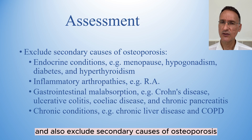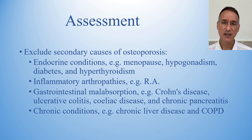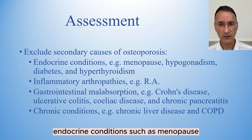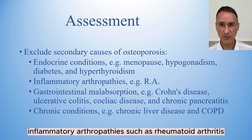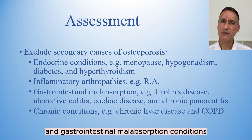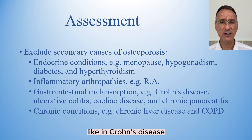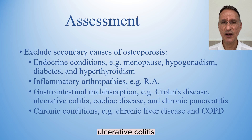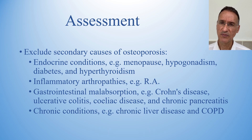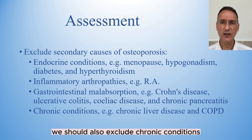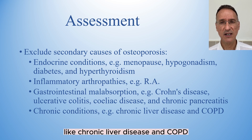We should also exclude secondary causes of osteoporosis, such as endocrine conditions including menopause, hypogonadism, diabetes, and hypothyroidism; inflammatory arthropathies such as rheumatoid arthritis; gastrointestinal malabsorption conditions like Crohn's disease, ulcerative colitis, celiac disease, and chronic pancreatitis; and chronic conditions like chronic liver disease and COPD.